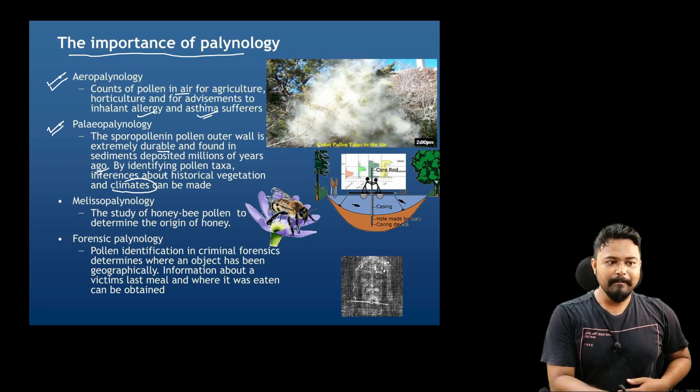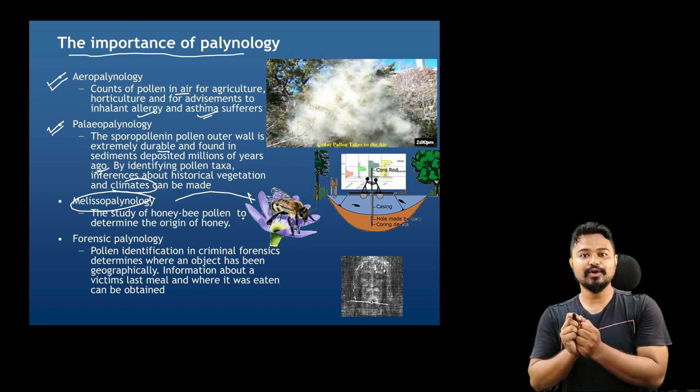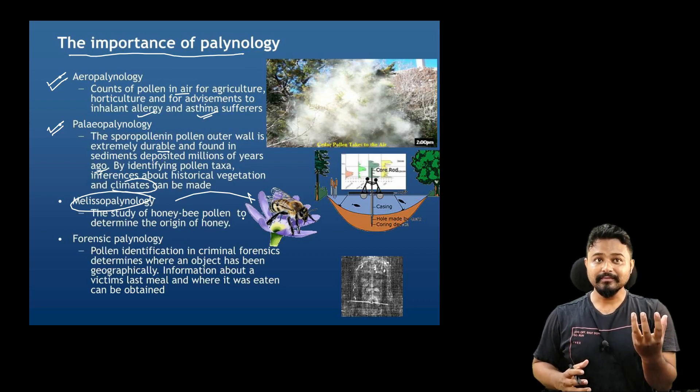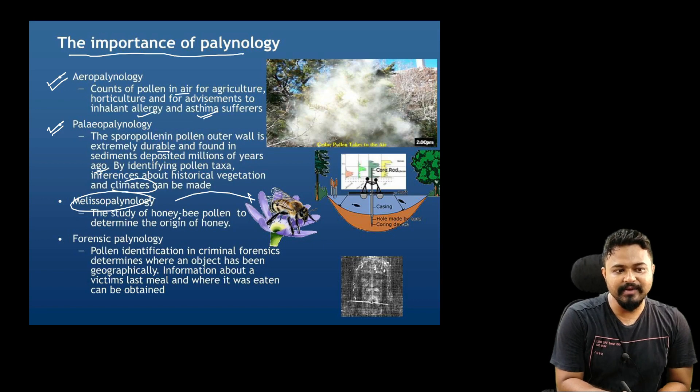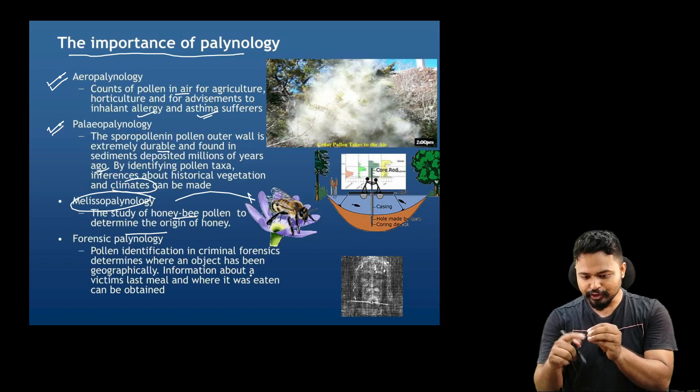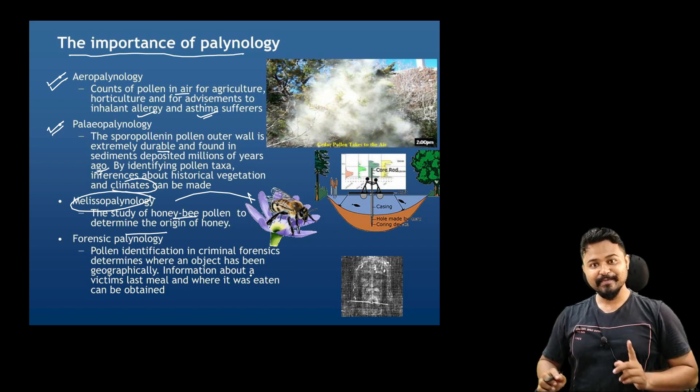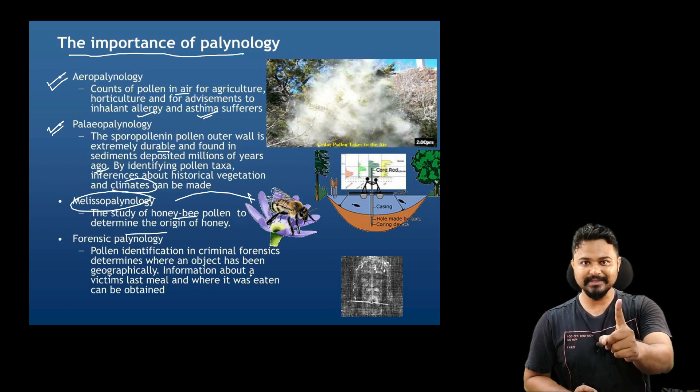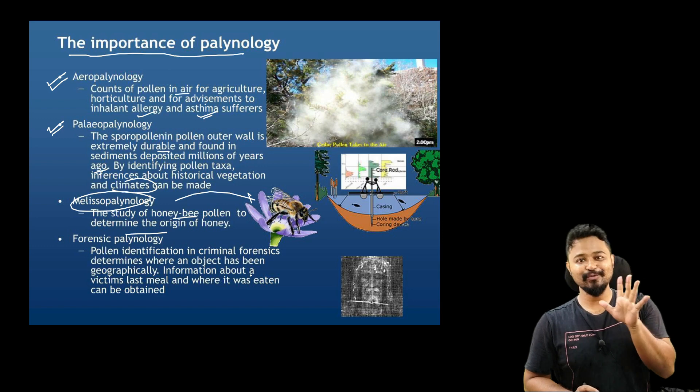Melissopalynology means the study of honeybee pollen structure. From the honeycomb structure, we can understand the vegetation, plants, and diversity of that area. Melissopalynology is the study of honey bee pollen to determine the origin. By studying this pollen origin, we can understand the diversity of plants around a 10km area.